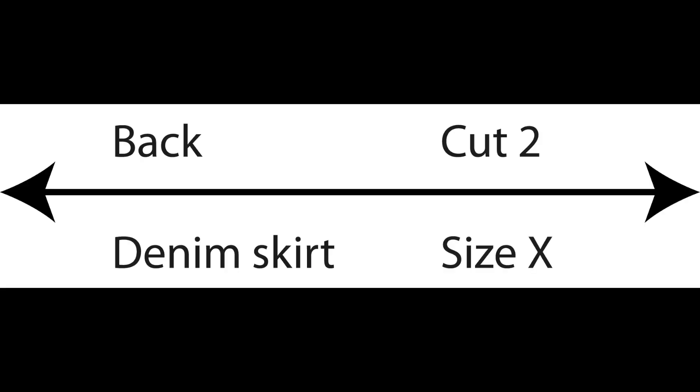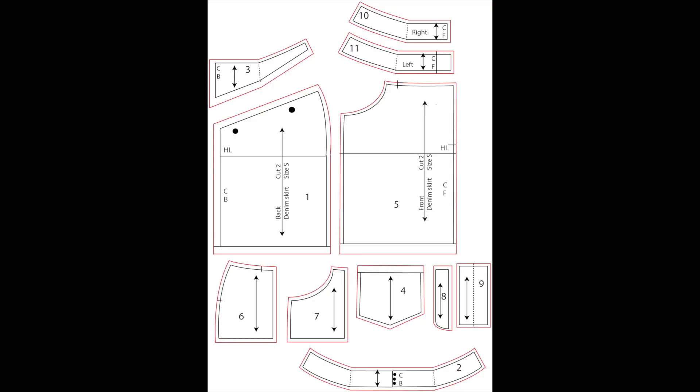Each pattern piece needs a grain line. The name, the garment name, the cut information and the size. This is the finished pattern pieces for the whole of the denim skirt.